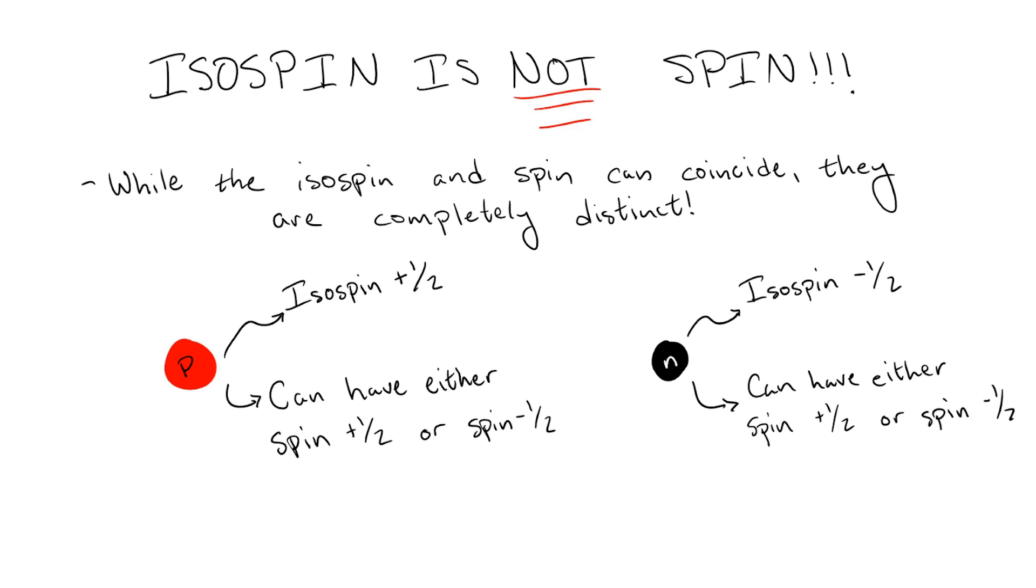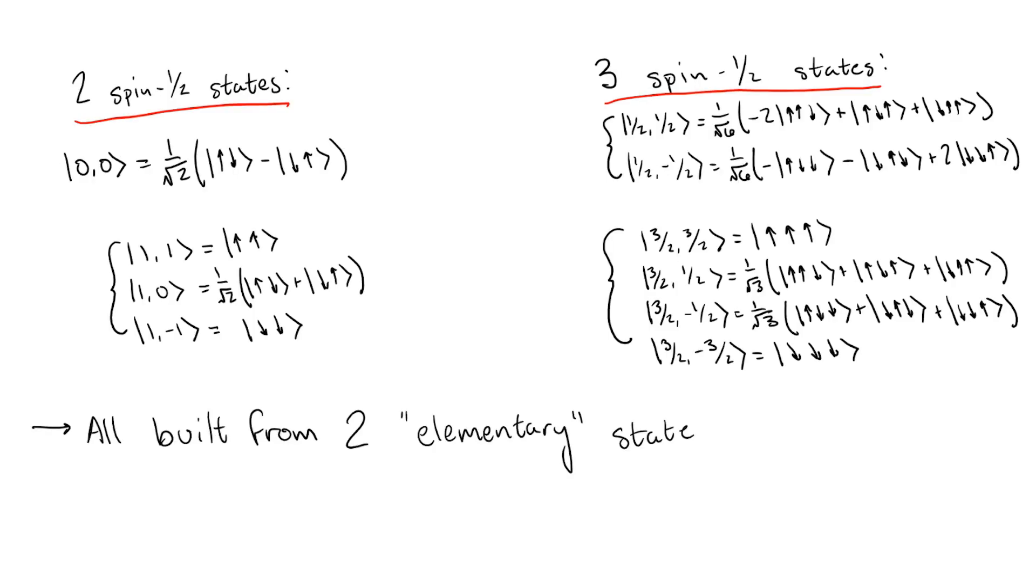Now, if we look at the combined spin states, not the isospin states, we can see that all of them can be built from just two fundamental pieces, the up state and the down state. So, we might wonder if we can do the same thing for isospin. In particular, we will consider just two fundamental particles, one up isospin particle and one down isospin particle, and try to build all of these more general isospin families from just combinations of these particles.